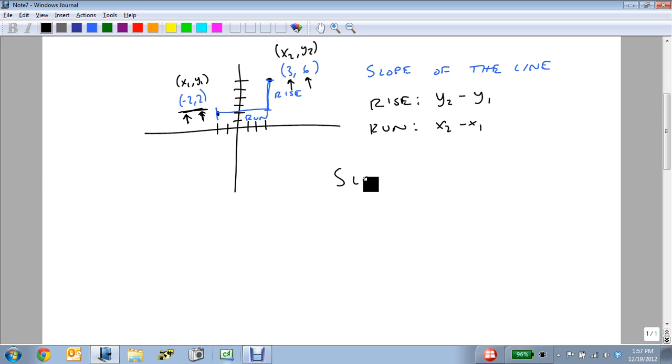And our formula for slope, which we're going to use the variable m to be, is the rise divided by the run.